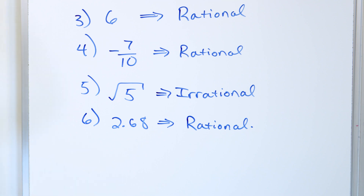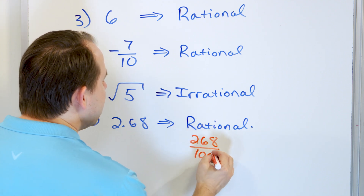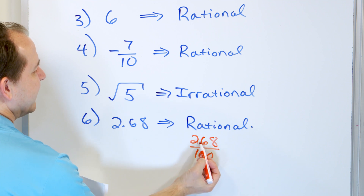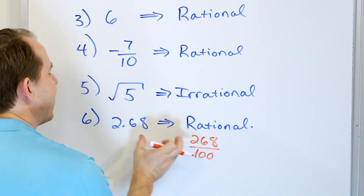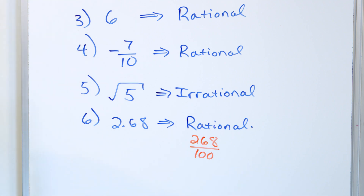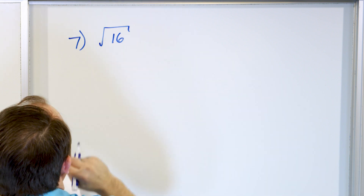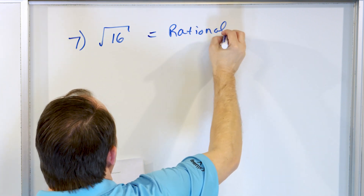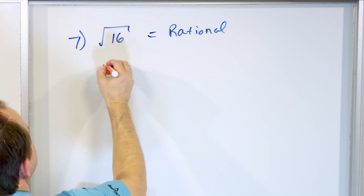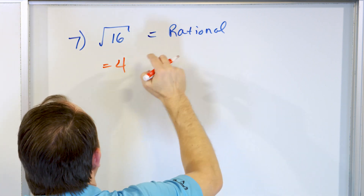In fact, we can write 2.68 as a fraction right now. When you divide by 100, you move the decimal. We can write this as 268 divided by 100 — that takes the decimal and moves it two spots to the left, giving us 2.68. So 268 over 100 is a fraction representation of 2.68. What about the square root of 16? We know this has got to be rational because the square root of 16 is 4, since 4 times 4 is 16, and 4 is a whole number. So since these two things are equal, the answer has to be rational.